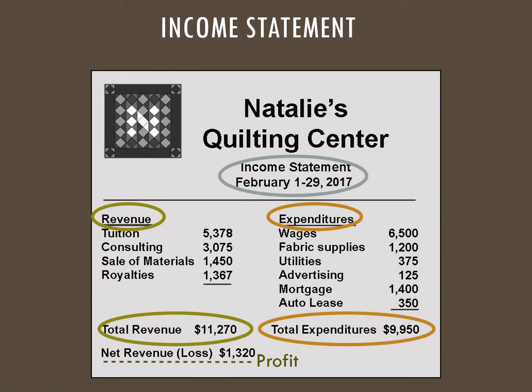Let's look at our example again with Natalie's Quilting Corner. If we look at the overall statement for February 2017, we can show a total revenue of $11,270 and a total expenditure of $9,950. At the bottom, we have the net revenue of $1,320, which means it's a profit.